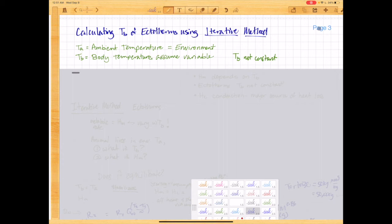Now let's talk about how to calculate the body temperature of an ectotherm using the iterative method. The problem is that ectotherms don't have a constant body temperature. It can fluctuate depending on the environment and various situations.